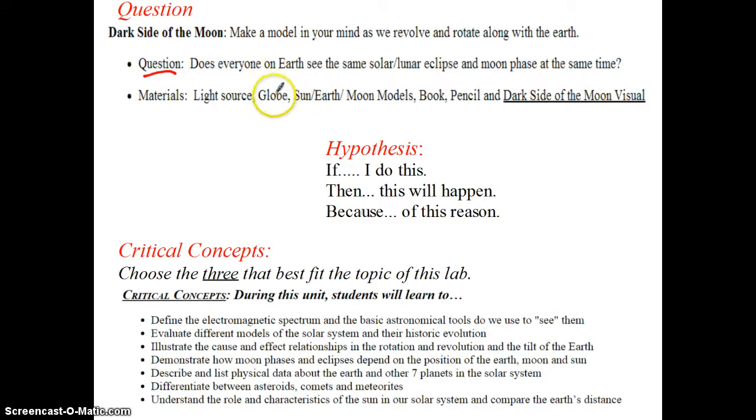So, starting with the question, as always, how does everyone on Earth see the same solar and lunar eclipse and moon phase? And this is the key here, at the same time. So yes, we can see the solar and lunar eclipses. We can see the moon phases, but the question is, can we do it at the same time? So our hypothesis, if I do this, something with the model, so what could we do with the model, then this will happen. We'll create some part of the activity that we can help to show that people do or do not see this, and because of this reason. And the basic critical concept, three of the best fit for this lab.